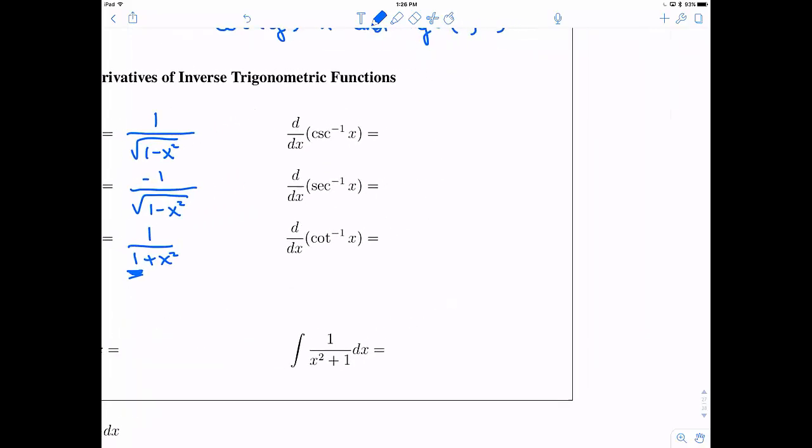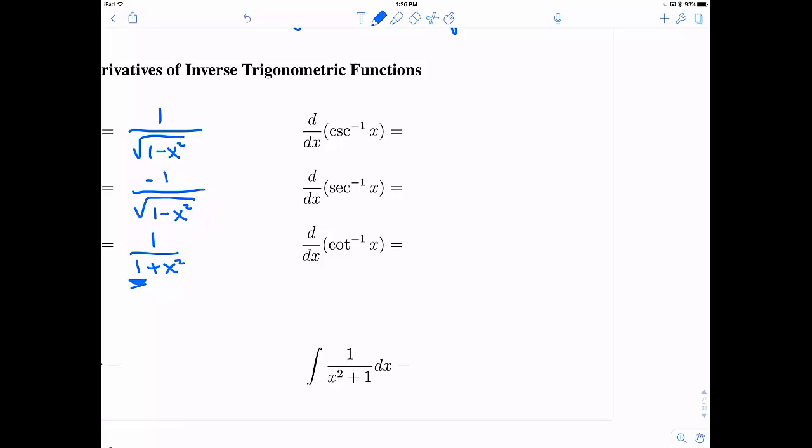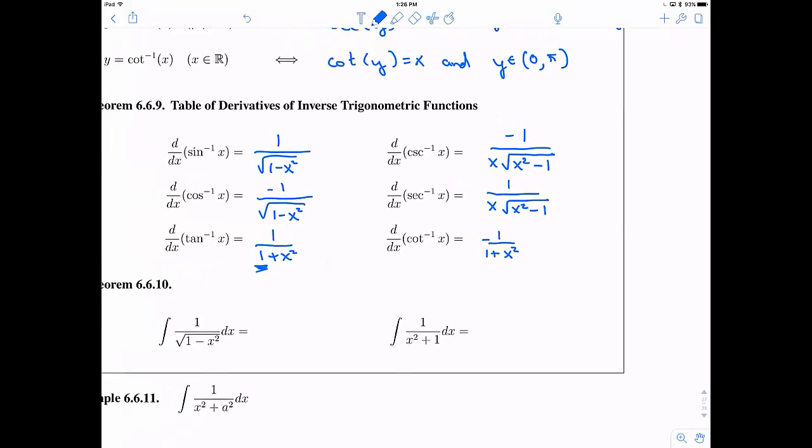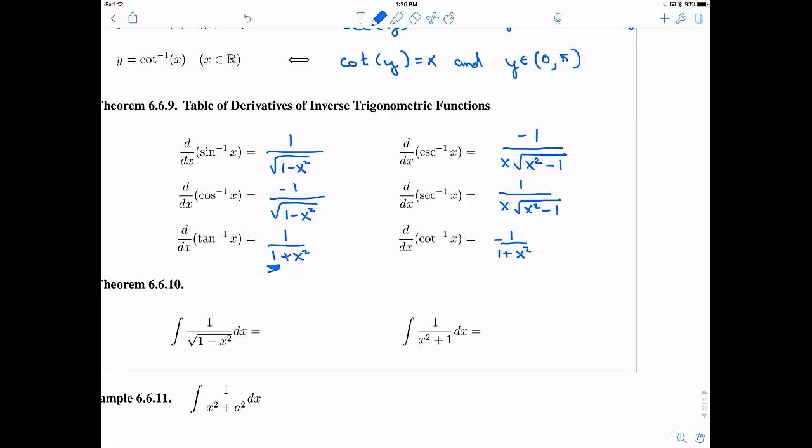So when we go ahead and take derivatives, these are the ones that we already know, and then these are the new ones. So if I want to take the derivative of inverse cosecant, that's going to be negative 1 over x times root x squared minus 1. The derivative of secant inverse is going to be the same thing as cosecant, but just without the negative sign. And then likewise, the derivative of cotangent inverse is going to be just like tangent inverse, but with a negative sign. So you can see that these things are very related.